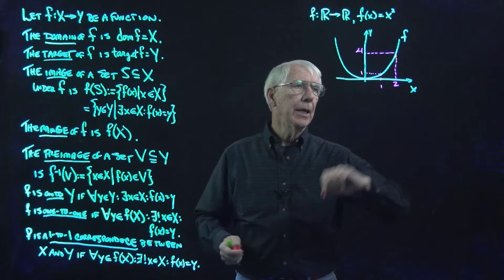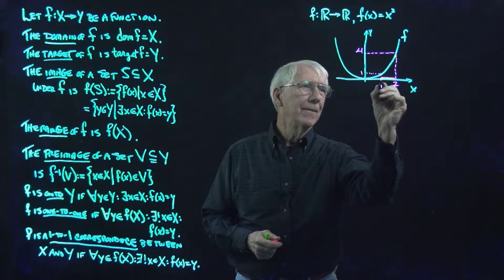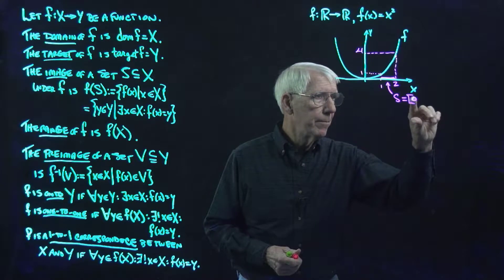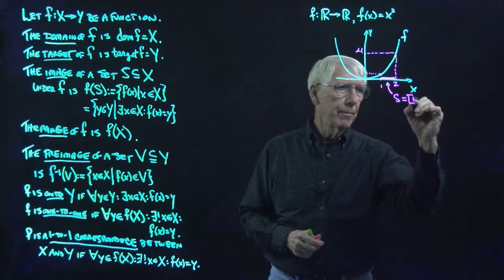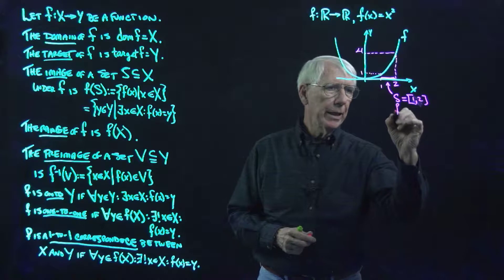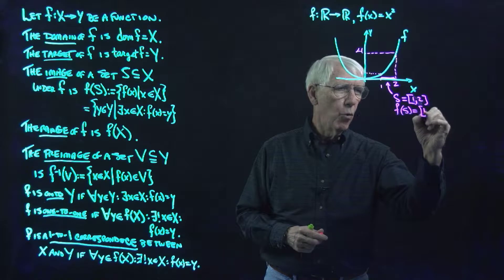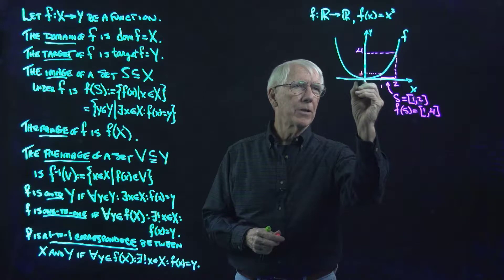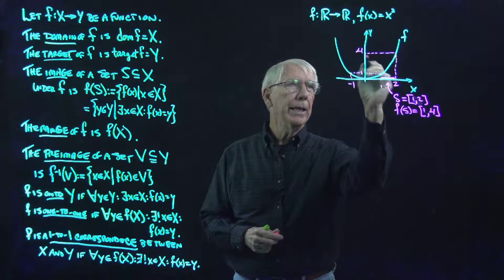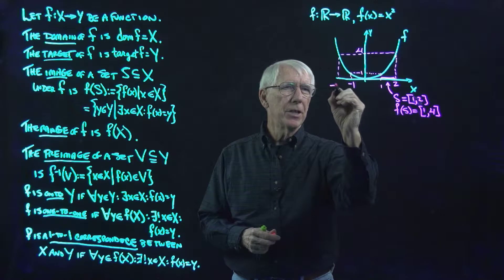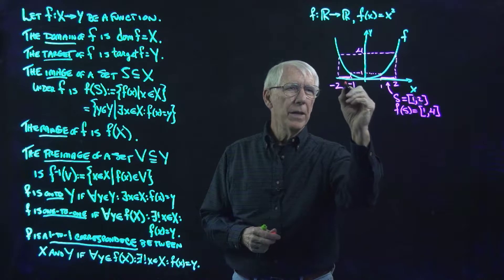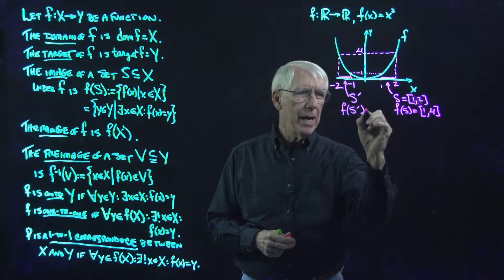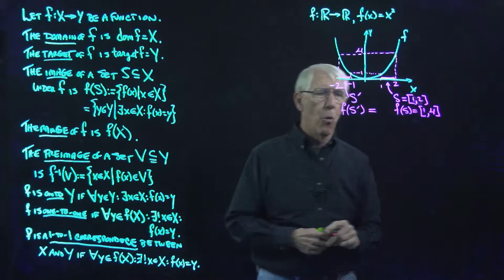So if that's 2, then this is 1, and this is 1. Let's note that here we have, if this is the set S — let's say it's the interval from 1 to 2 — then clearly f of S is the interval from 1 to 4.